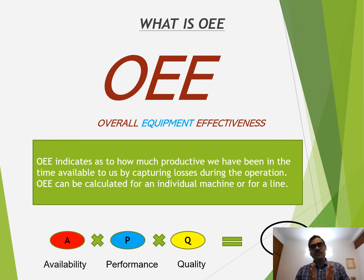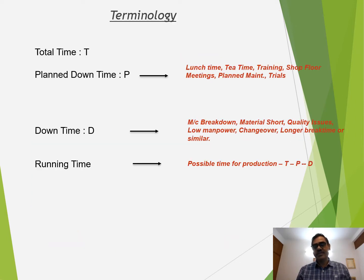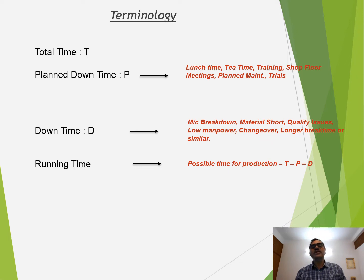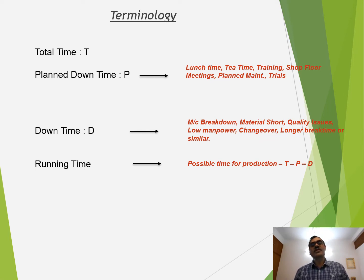OEE can be calculated for one particular machine or for one line. Let us understand some terminologies. Total time is one shift or two shifts — whatever is the time, that is the total time. Then there is planned downtime — how much downtime have we planned already? That means lunch time, tea time, shop floor meetings, daily preventive maintenance of the machine, trainings, and sometimes trials. All these planned things come into this category.